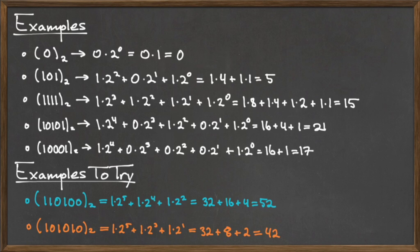The binary number 110100 is the base 10 number 52, and the binary number 101010 is the base 10 number 42.